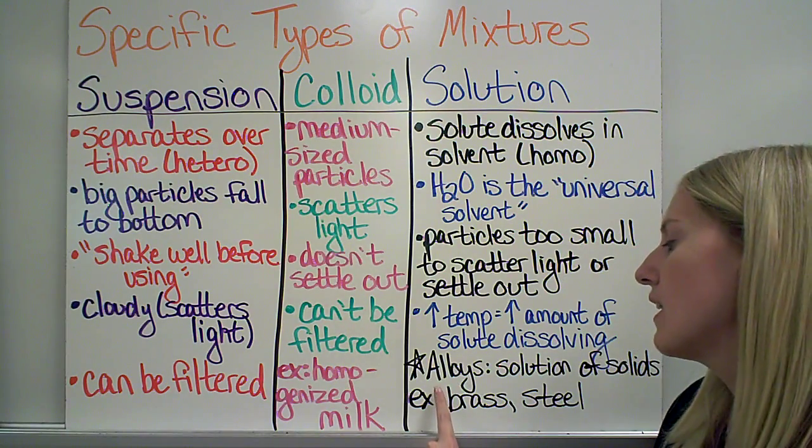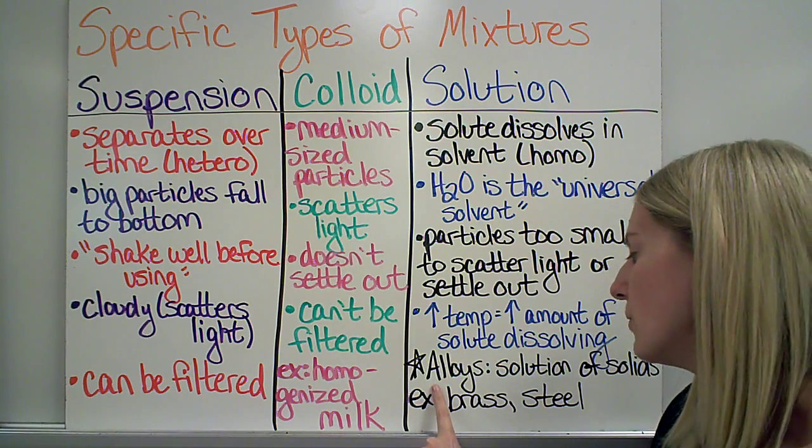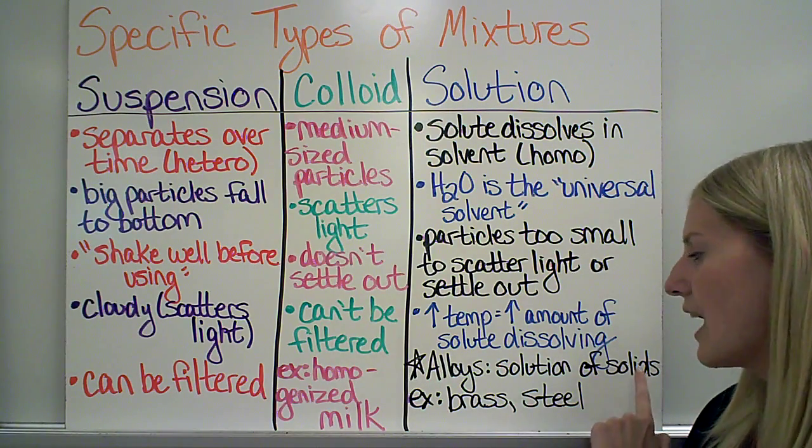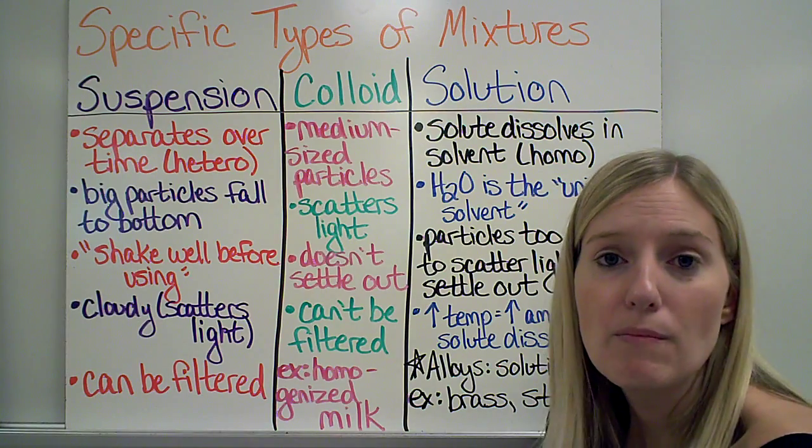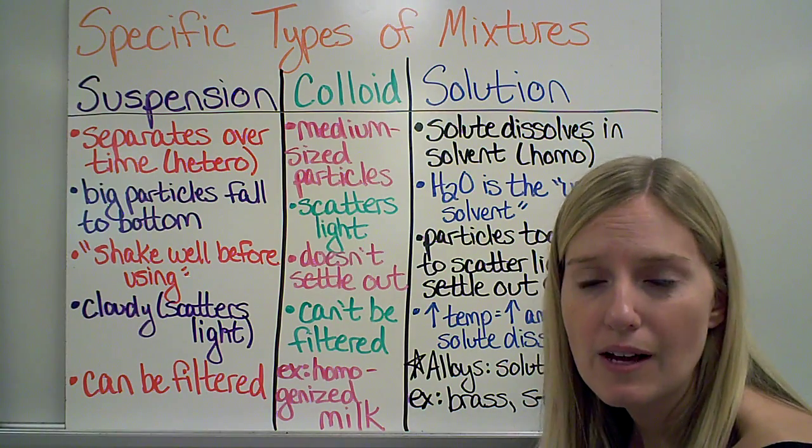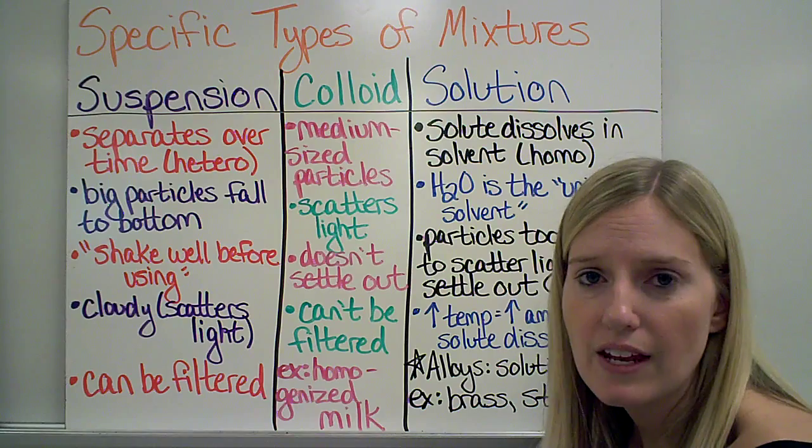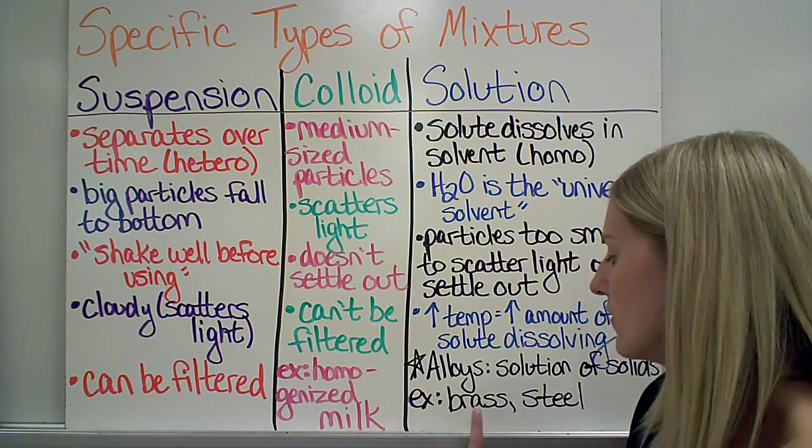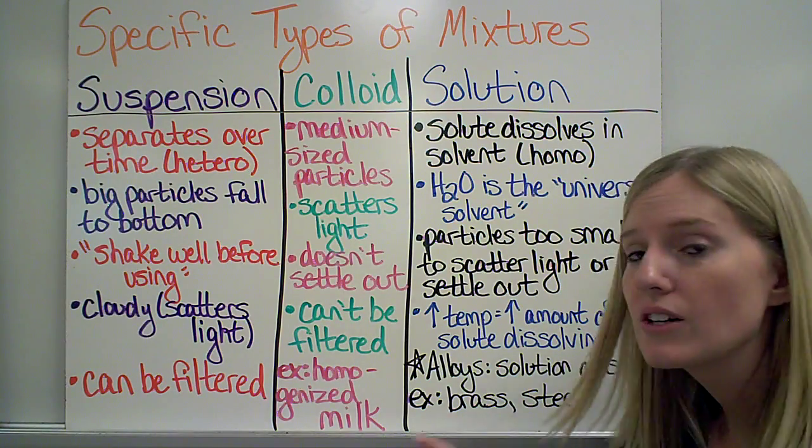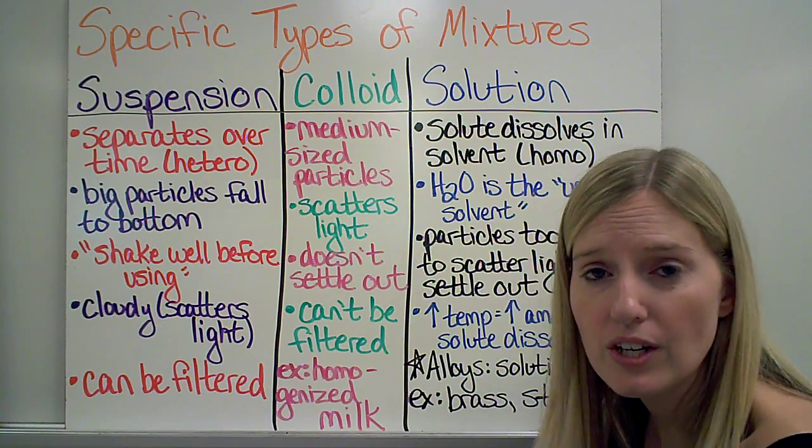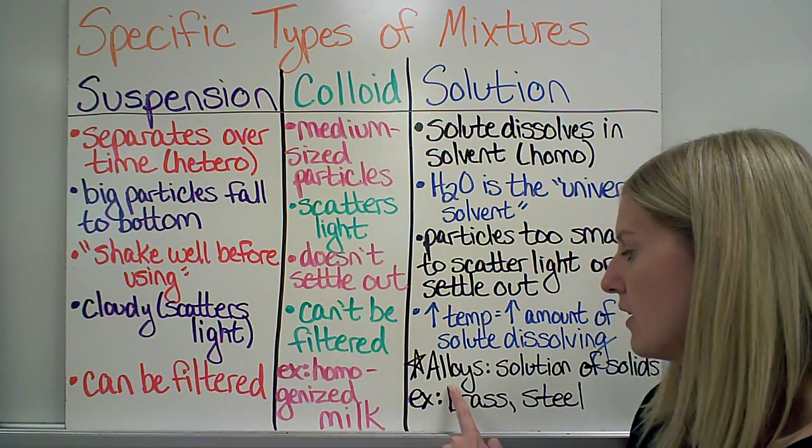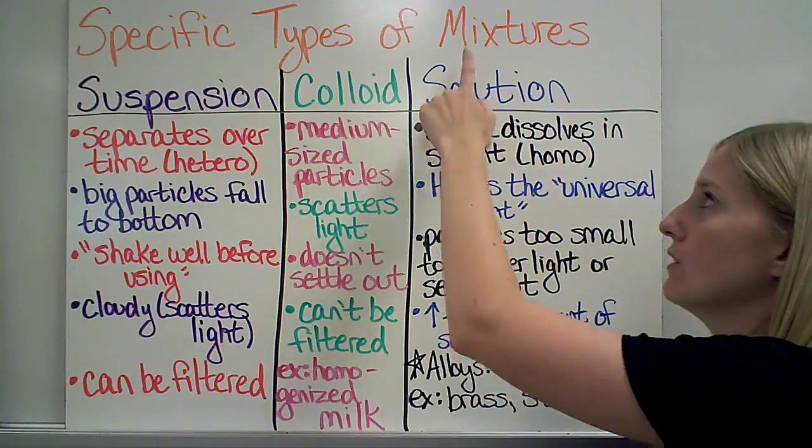And then a specific example of a solution is an alloy, which is a solution of solids. So usually this is for metals. I melt metals down and I mix them together, and then I let them cool. So things like brass, steel, sterling silver, those are all alloys, which are examples of solutions.